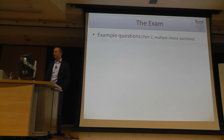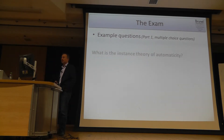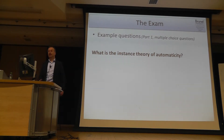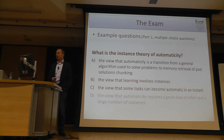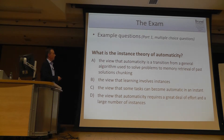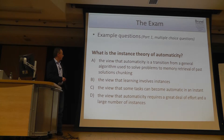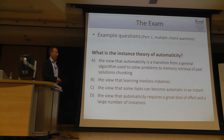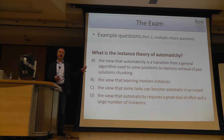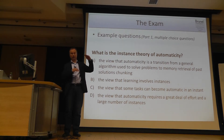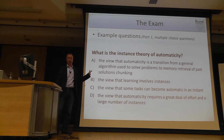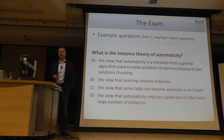Let's have a look at a few example questions for the multiple choice part. For instance, something like: what is the instance theory of automaticity? You may get four different choices, like the view that automaticity is a transition from a general algorithm used to solve problems to memory retrieval of past solutions, or the view that learning involves instances, or the view that some tasks can become automatic in an instant. There is always only one right answer. The questions will all be in a rather short format so that when you know the answer you can go very quickly through them.